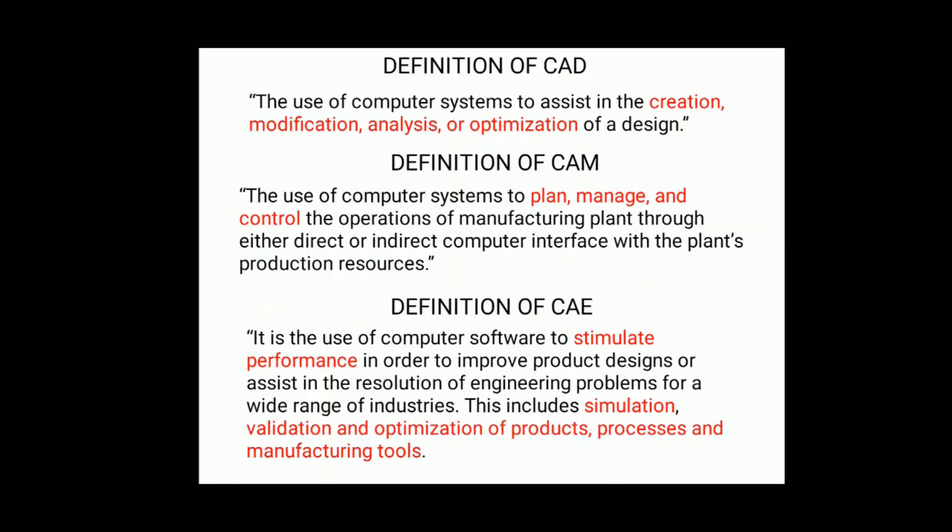CAD is the creation and modification of design. CAM is the planning and management of various process plans, controlling various operations using CAM software through direct or indirect computer interference — an example being NC part programs. CAE uses computer software to simulate performance in order to improve product designs, including simulation, validation of results, and optimization of products, processes, and manufacturing tools.